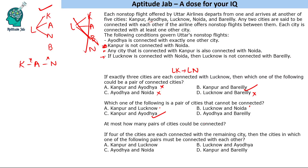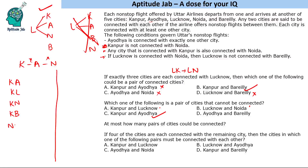Question 3: At most, how many pairs of cities could be connected? Let us take two cases and try to find the maximum number of connections possible. With 5 cities — Kanpur, Ayodhya, Lucknow, Noida, and Bareilly — we have 10 possible pairs of connections total.